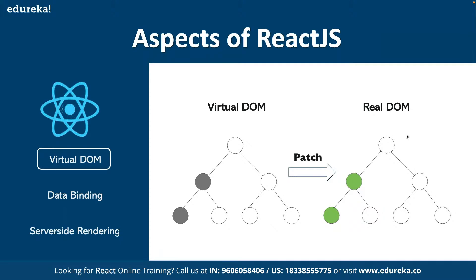This makes React.js much faster compared to other platforms, because we don't have to recreate the complete tree again and again just to update a single item. This makes the entire process of fetching data much quicker compared to other platforms.